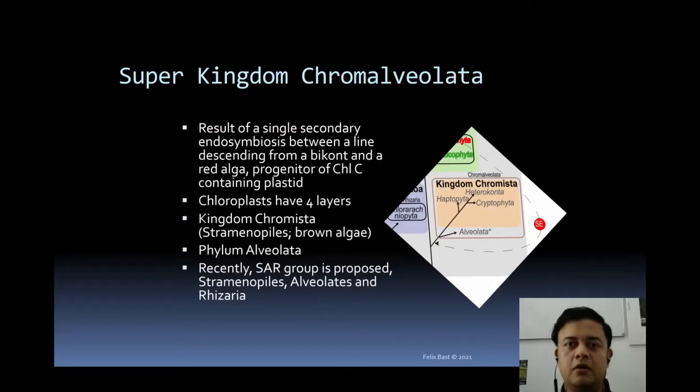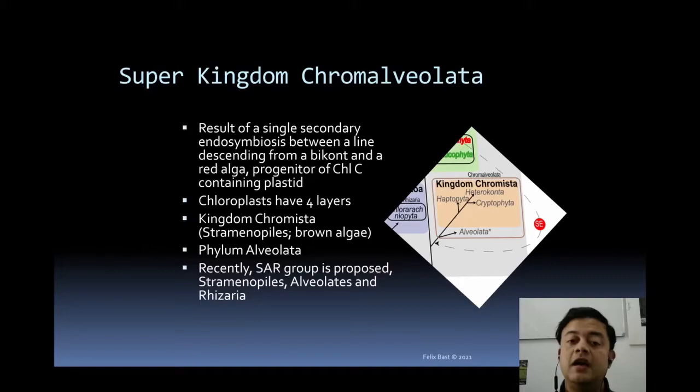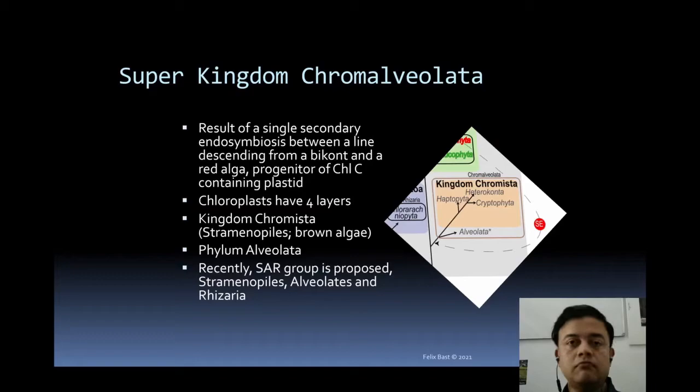Kingdom Chromista is all about Straminopyle — brown algae, macroalgae, seaweeds — which are exclusively marine, plus phylum Alveolates. Recently, the SAR group has been proposed phylogenetically: Straminopyles, Alveolates, and Rhizareans. Rhizareans from Protozoa have been placed into Chromista as part of this SAR supergroup.